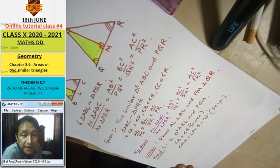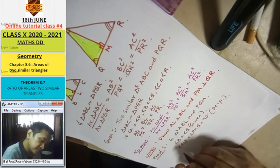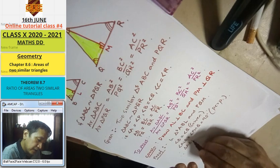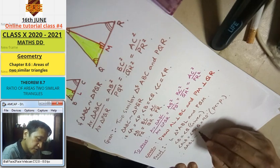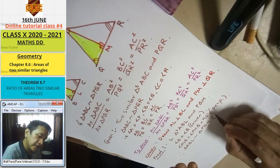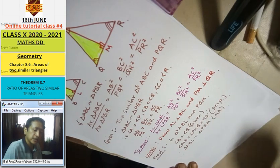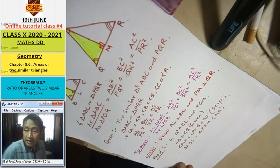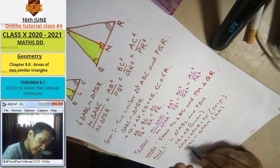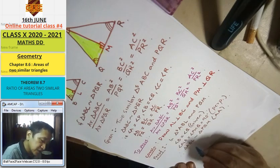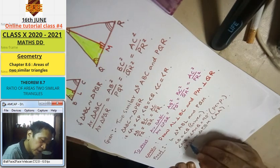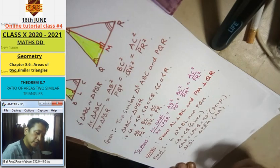Therefore, triangle ABL is similar to triangle BQM by AA similarity. From the corresponding sides: AB by BQ equals BL by QM equals LA by BM.